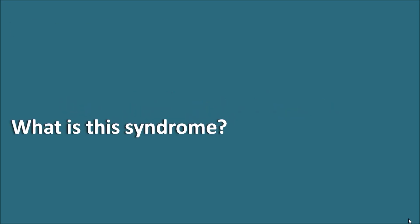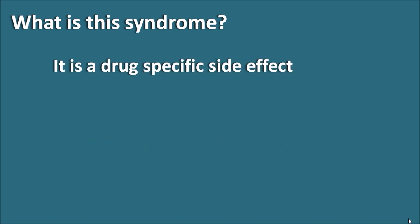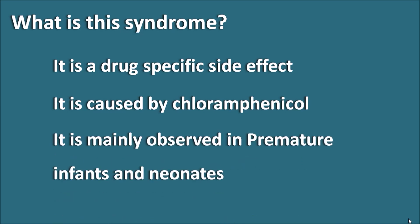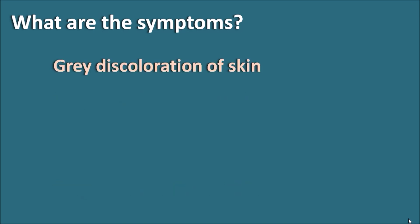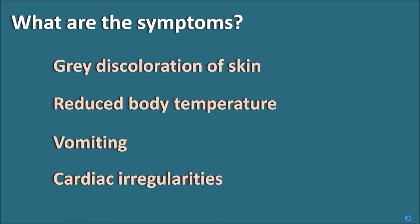Gray baby syndrome is a drug-specific side effect caused by the antibiotic chloramphenicol. It is mainly observed in premature infants as well as neonates. The main symptom of this syndrome is the gray discoloration of the skin, which is why it is called gray baby syndrome. Apart from this, it can also produce reduced body temperature, vomiting, as well as cardiac irregularities.